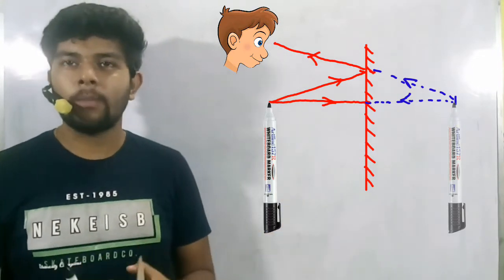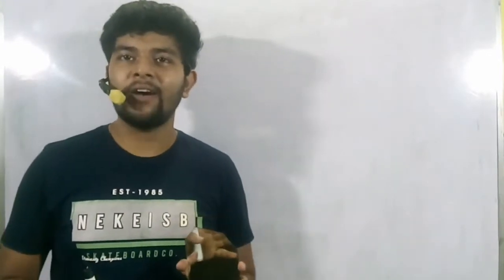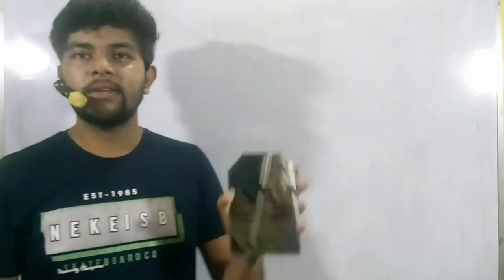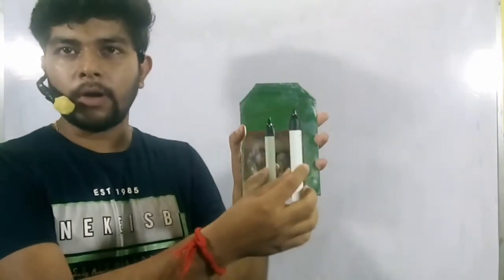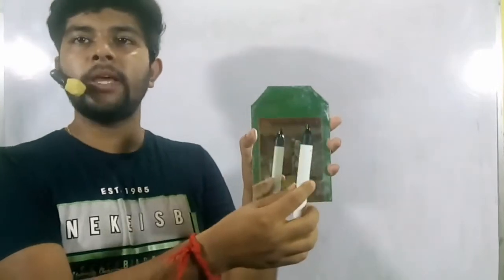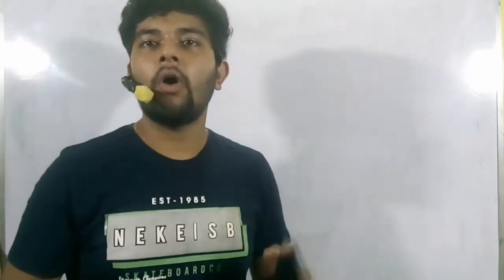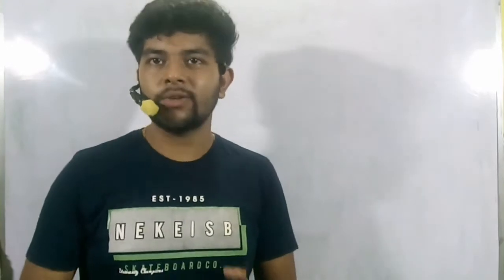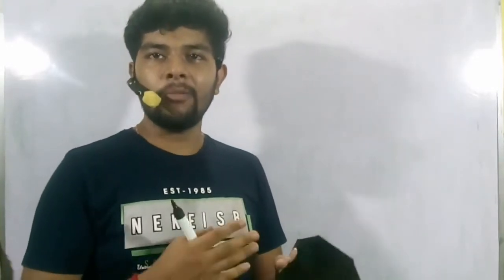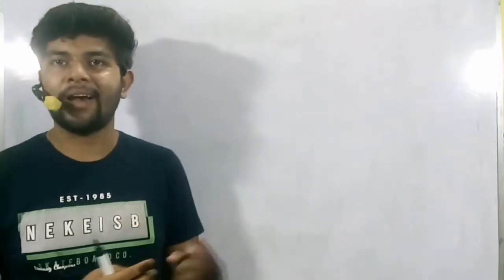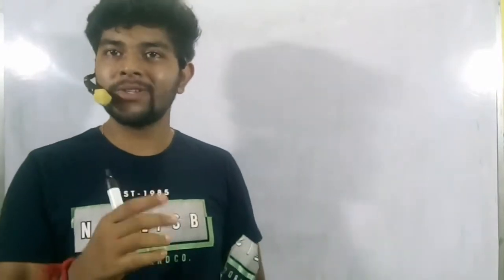At that point the image of the pen is formed. So the first characteristic of a plane mirror is that the image of the object formed by the plane mirror is formed behind the mirror. This is the first characteristic: images are formed at the back of the mirror.